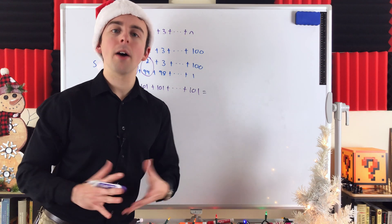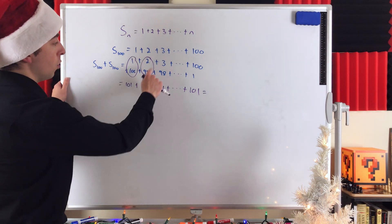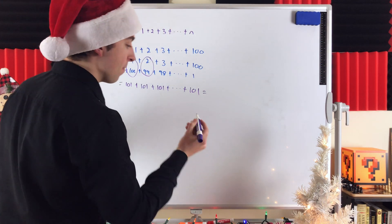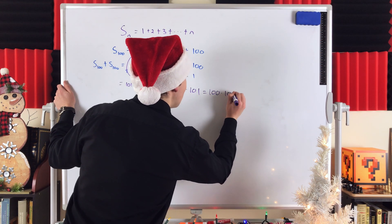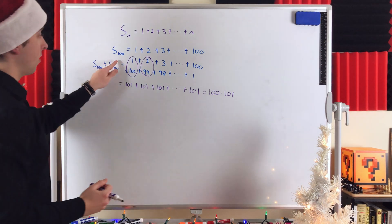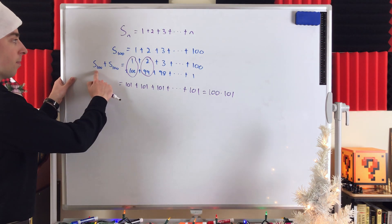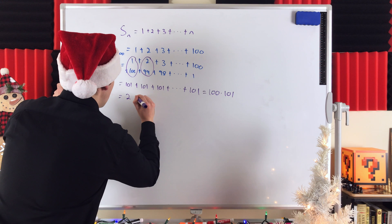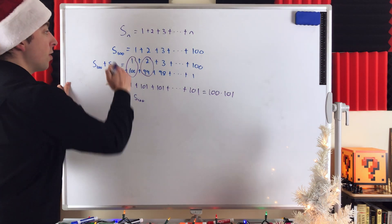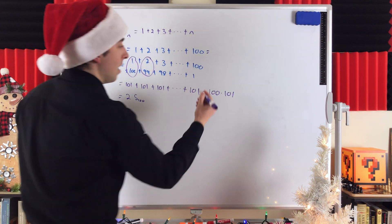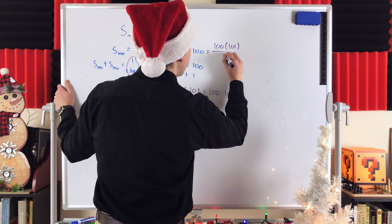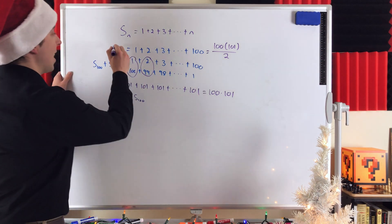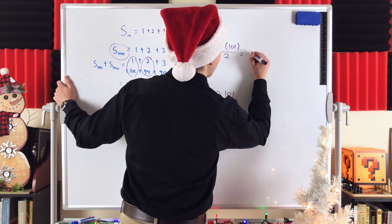So what is this equal to? How many copies of 101 are there? Well, there are 100 total pairs each adding to 101. So there are 100 copies of 101 being added together, and that is 100 multiplied by 101. This number is the sum we want plus the sum we want — in other words, it's double the sum we want. This equals 2 times S100. So the original sum S100 is equal to 100 multiplied by 101 divided by 2, because this is 2 copies of S100. And this is equal to 5050.